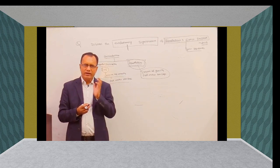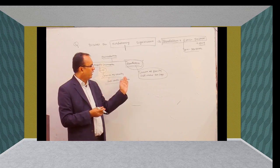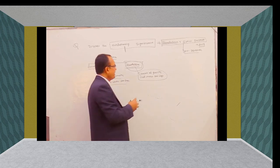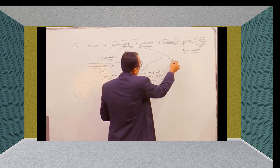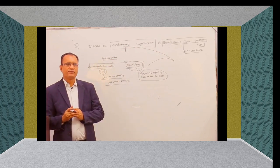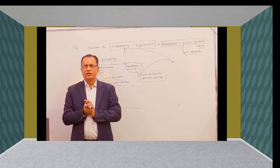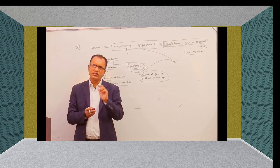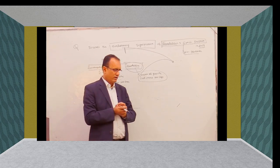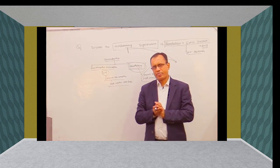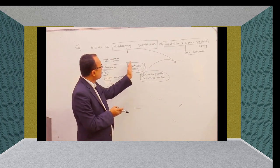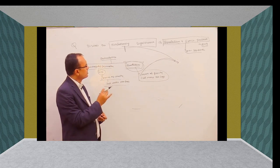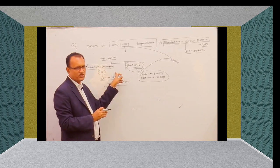When our ancestors adopted bipedalism and the centre of gravity fell under two legs, it had great evolutionary significance because many changes happened in the course of evolution after bipedalism was adopted. Evidence of this is found in fossil remains as well. Therefore, it has important evolutionary significance. In the introduction of your answer on the evolutionary significance of bipedalism, you have to write these two things.